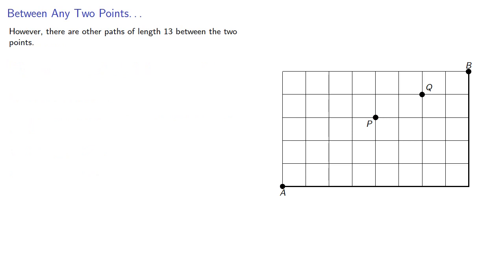What's worth noting is that there are other paths of length 13 between the two points. For example, this one, or this one. And since all of these paths have least distance, all of these are geodesics.